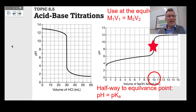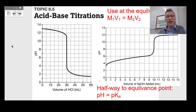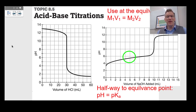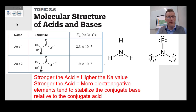Make sure you keep acids on one side and bases on the other when using M₁V₁ = M₂V₂. On the weak acid titration graph, halfway to the equivalence point is 5 milliliters, and at that point the pH equals the pKa. So we can estimate the pKa is about 5.4.